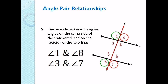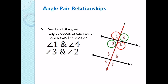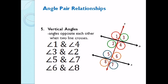Now we are on the last angle pair relationship: vertical angles. These are angles opposite each other when two lines cross. The vertical angles are: angle 1 and angle 4, angle 3 and angle 2, angle 5 and angle 7, and angle 6 and angle 8.